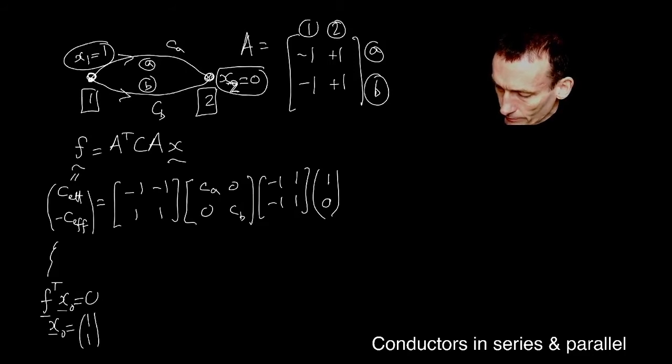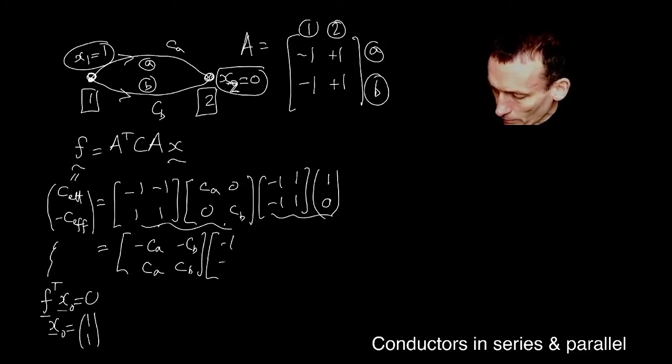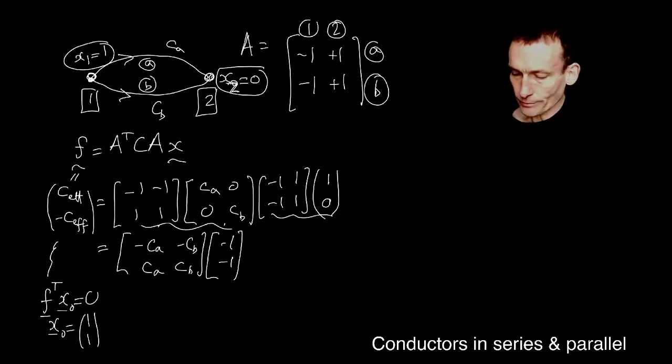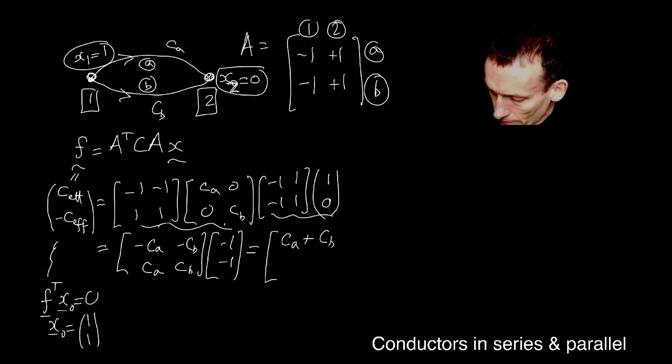So I'm going to do this in stages. Let me work out the product of these two. Don't I get minus CA, CA, minus CB, CB? I've just worked out those two. And now let me work out these. Don't I get minus one minus one? So if I now do that multiplication, I think I get CA plus CB minus CA minus CB.